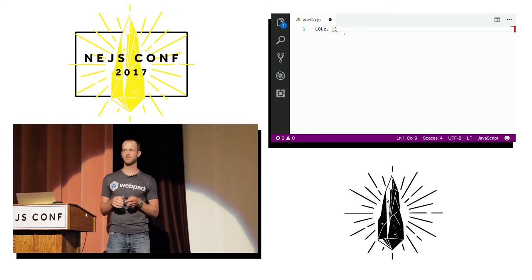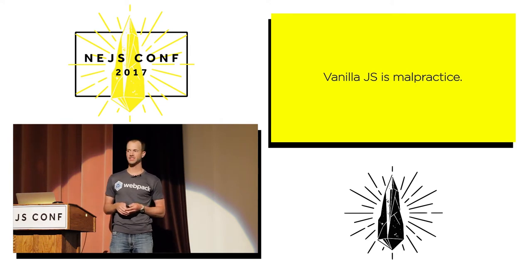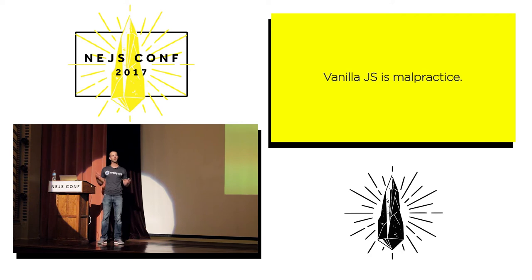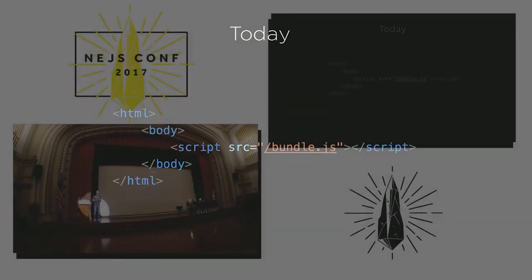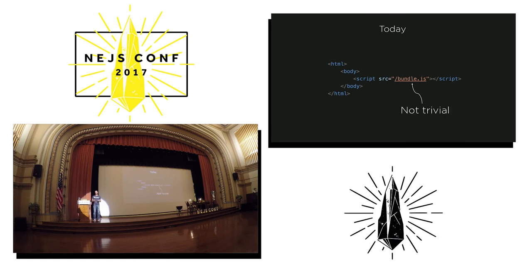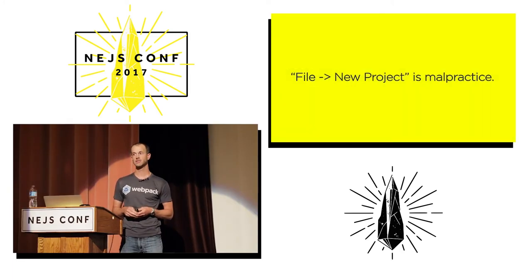This was funny at the time, but I believe that VanillaJS is malpractice. Today as developers, if we're not leveraging each other's work, we are wasting time and reinventing the wheel. We should be standing on the shoulders of giants. Today, we're expecting to publish applications to the web with a single minified bundle — maybe tree-shaken, maybe code-split. You want explicit dependencies, modular, minified, transpiled, linted, tested, with automated builds and automated updates. I believe file new project is malpractice.